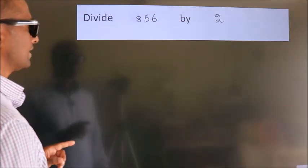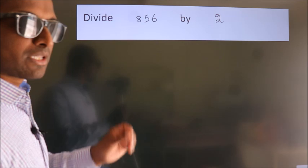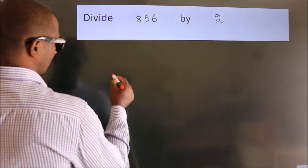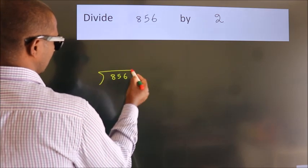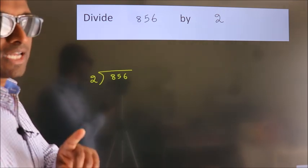Divide 856 by 2. To do this division, we should frame it in this way. 856 here, 2 here. This is your step 1.